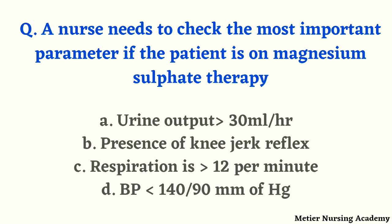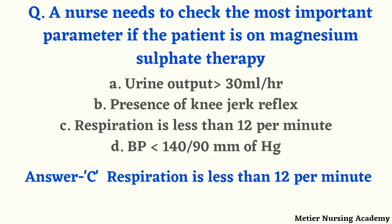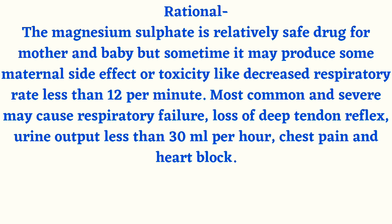A nurse needs to check the most important parameter if the patient is on magnesium sulfate therapy. Options are: urine output more than 30 ml per hour, presence of knee jerk reflex, respiration less than 12 per minute, or BP less than 140/90 mmHg. The right answer is option C, respiration less than 12 per minute. Magnesium sulfate is relatively safe but may produce maternal toxicity including decreased respiration rate. Severe toxicity causes respiratory failure, loss of deep tendon reflexes, urine output less than 30 ml per hour, chest pain, and heart block.